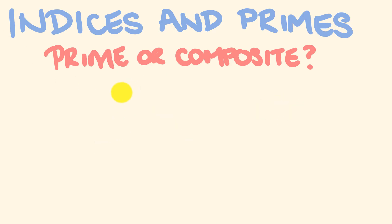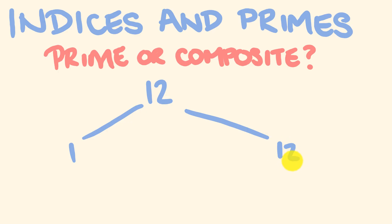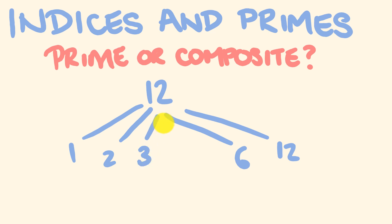What about the number 12? What factors does 12 have? 12 has a whole bunch of factors. We have 1 and 12, but we also have 2 and 6, because 2 times 6 equals 12. We also have 3 and 4. So we know that 12 is a composite number. Also, because 12 is an even number that's not 2, we could have said pretty much straight away that 12 was a composite number.